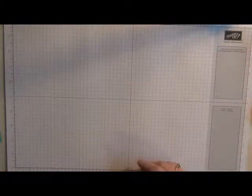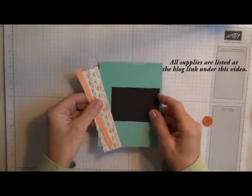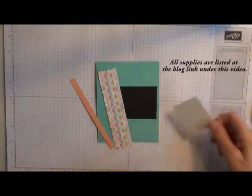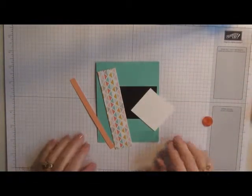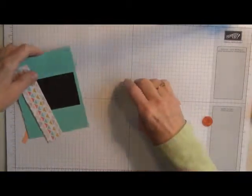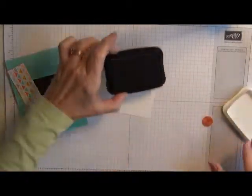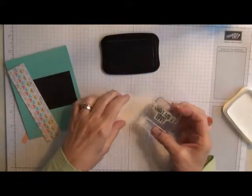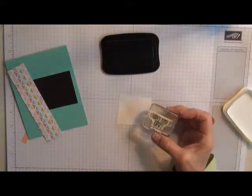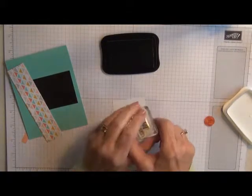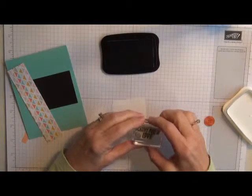So to start, these are the supplies that I'm going to use. I'm going to start just by using my Memento black ink and the Groovy Kind of Love sentiment. Now that stamp set has several other stamps that you can use but I kind of like this one.